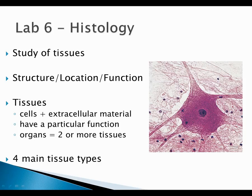We're going to start off with tissues. Generally, tissues are basically cells plus other stuff — proteins, sugars, collagen, things like that — that serve a particular function. When you throw two tissues together, you form an organ, so you're kind of building up to more complex and more functionally interesting materials.